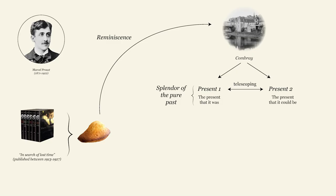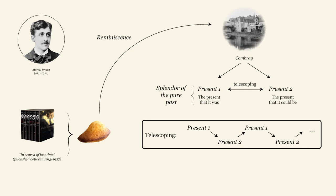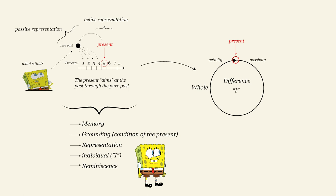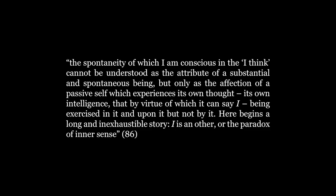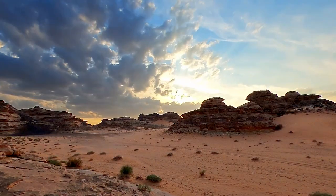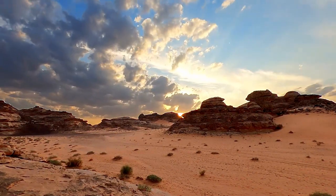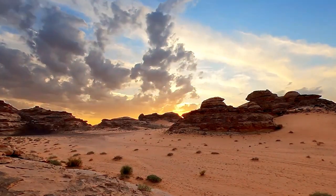This is quite important because it means that time now takes a new figure. The echo or back and forth produced in reminiscence means that time becomes circular. Difference is internalized, as Deleuze says. But this leads to a major issue which is also a motif that we have encountered many times now. As time becomes circular, the I is split. Indeed, if the arrow of time turns on itself, it's impossible for the self to decide if it is a cause or an effect, mind or matter. The spontaneity of which I am conscious in the I think cannot be understood as the attribute of a substantial or spontaneous being, but only as the affection of a passive self which experiences its own thought, its own intelligence, that by virtue of which it can say I, being exercised in it and upon it, but not by it. Here begins a long and inexhaustible story. I is another, or the paradox of inner sense. So we appear again to be in a massive impasse and it feels like the subject, the conscience that lives in this space, is bound to a terrible fate, to be split just after it realizes its own condition.